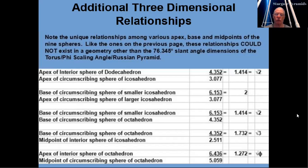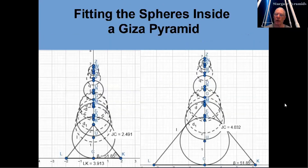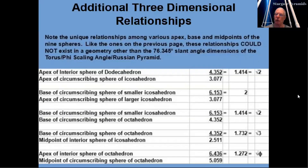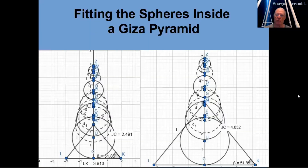The base of the circumscribing sphere of the octahedron divided by the midpoint of the interior sphere of the icosahedron equals 1.732, which is the square root of 3. And finally, the apex of the interior sphere of the octahedron divided by the midpoint of the circumscribing sphere of the octahedron is equal to 1.272, or the square root of 5. If you want to verify these in real time, you can come back to this table on this page and do those mathematical calculations for yourself.